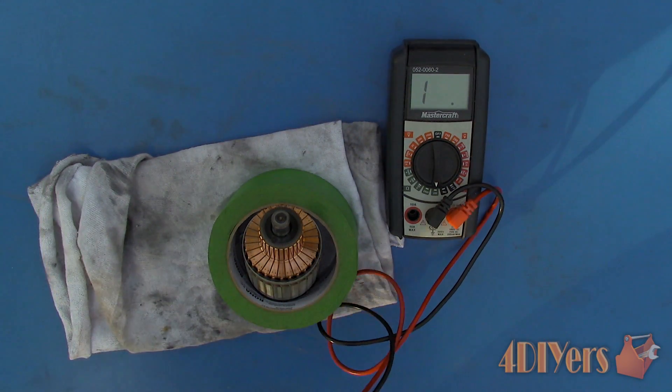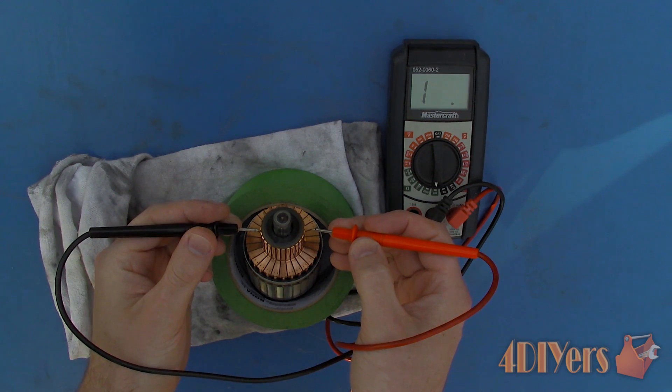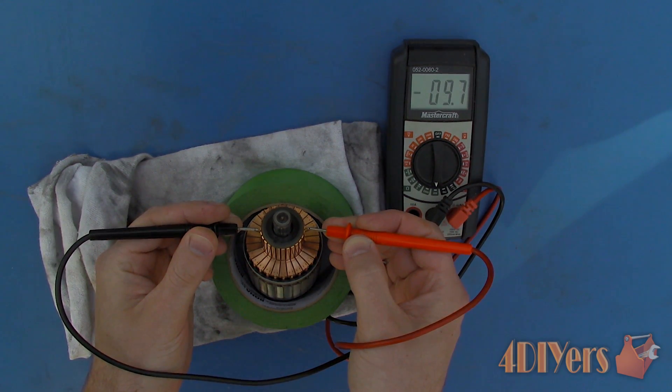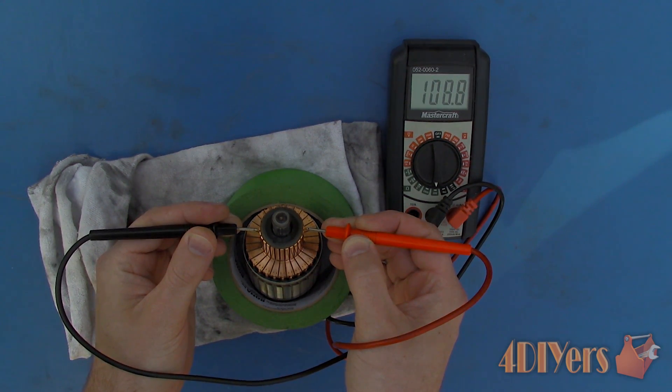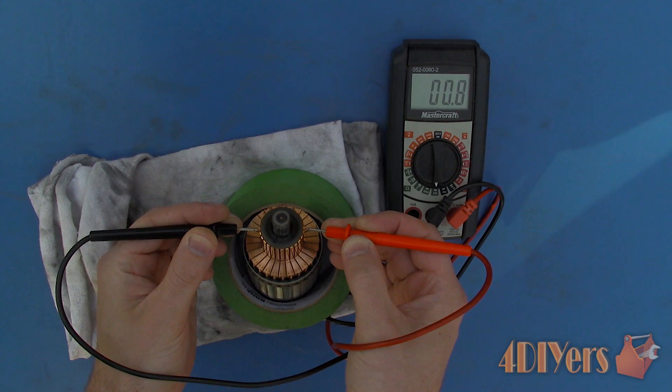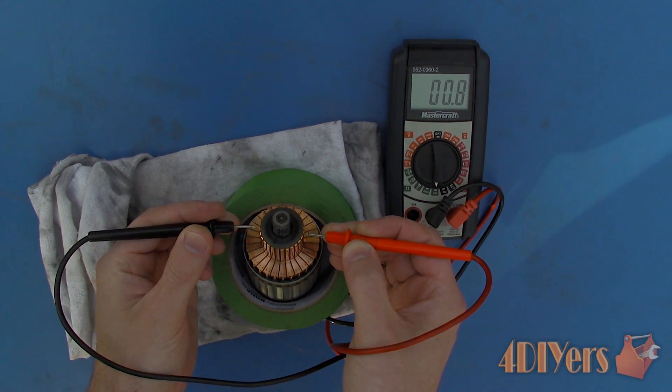Finally test number three. This too also involves testing the bars of the commutator. But is based on testing the bars directly across from each other or 180 degrees. We will be able to determine the condition of the windings.